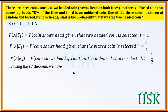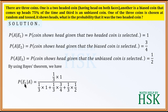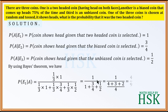Applying Bayes' theorem: P(E1|A) = (1/3 × 1) / (1/3 × 1 + 1/3 × 3/4 + 1/3 × 1/2). Cancelling 1/3 throughout, this simplifies to 1 / (1 + 3/4 + 1/2). Taking LCM gives 1 upon (4+3+2)/4, which simplifies to 4/9. So the required answer is 4/9.